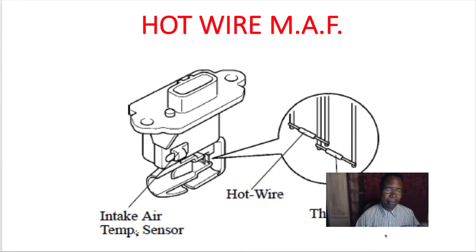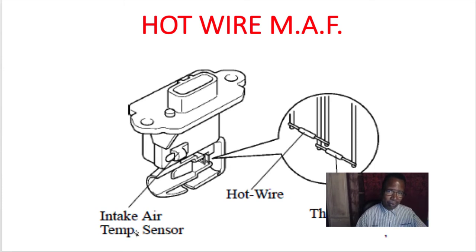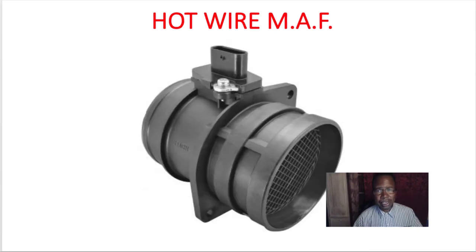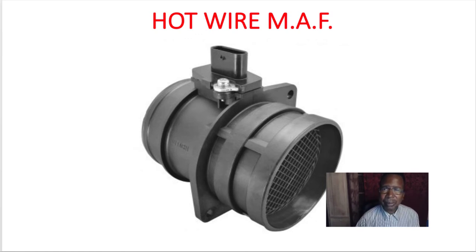So far we've got air volume, air intake temperature, and air density. These sensors relay a signal back to the computer on all three things, though they differ. The mass air flow sensor handles temperature and volume — or the volume might just be density.